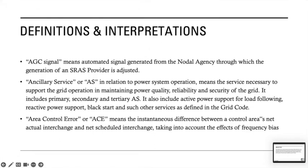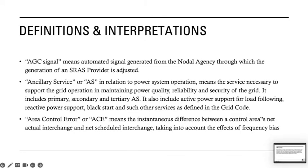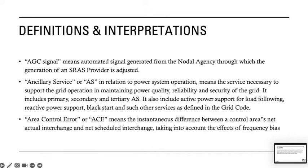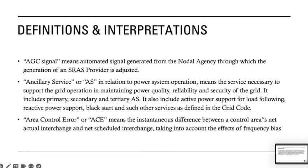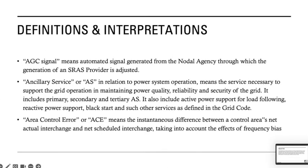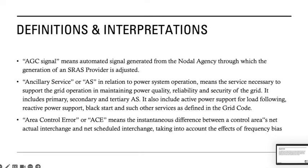As most of the terms I have been using in this video I have already covered in my last two videos, so I would not be repeating them. Regarding the new terms which may come up in this video, I would be discussing only those terms. The first thing I want to talk about is the AGC signal. The AGC signal means the automated signal generated from the nodal agency through which the generation of the ancillary services provider is adjusted.